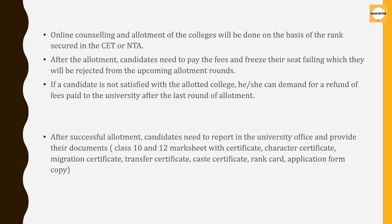Once a college is allotted to you, first of all you will pay your counseling fee and reserve your college seat. You can also wait for subsequent rounds if you want a different college. But if you have not done your fee payment for counseling and have not confirmed your first allotment, then your first allotment will also be declared void.